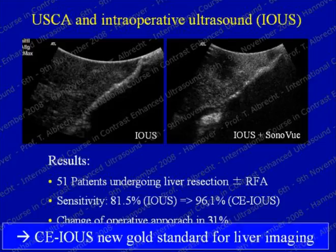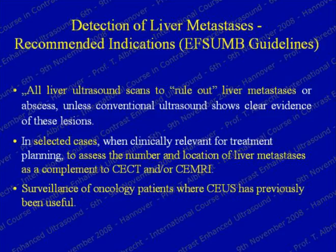The EFSEM guidelines have recommended indications for contrast-enhanced ultrasound. The crucial point is that all liver ultrasound scans to rule out liver metastasis should use enhancement — an unenhanced ultrasound is inadequate if you are serious about ruling out liver metastasis.